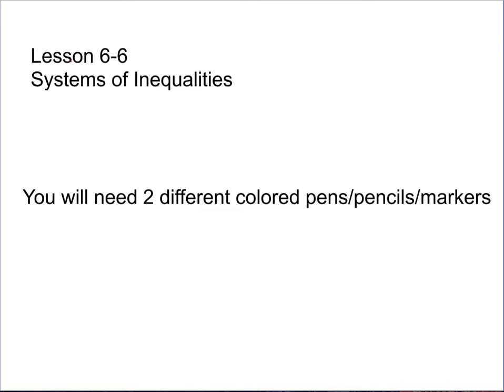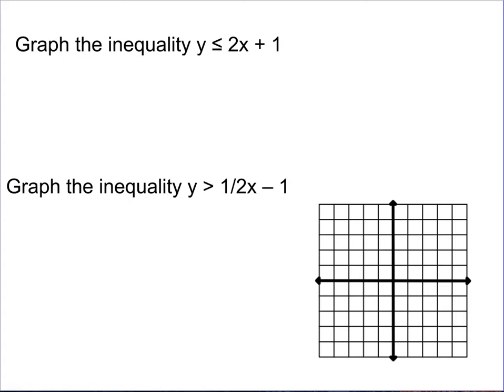Take a moment to get out a second writing utensil — I think that'll help as we go through some of the examples today. If you have a red and a blue, or a pencil and a pen, we've done this before: having two different colors lets us look at things on the same graph without getting confused between the two items we're graphing.